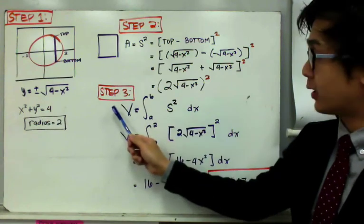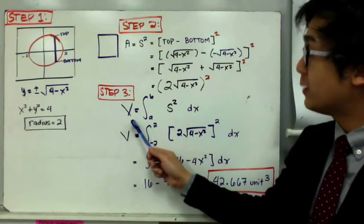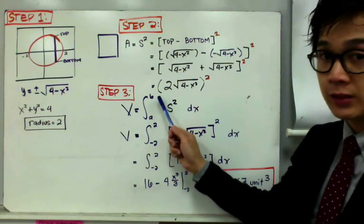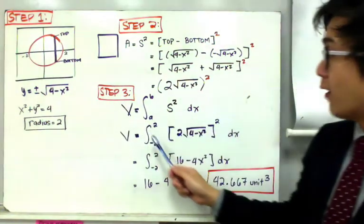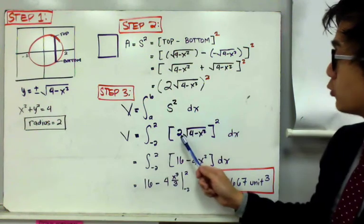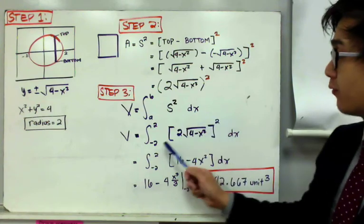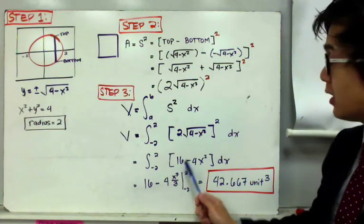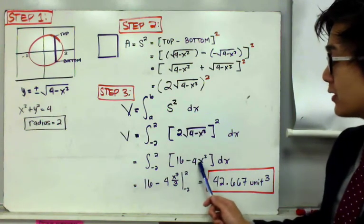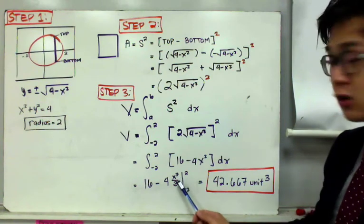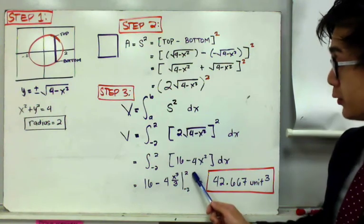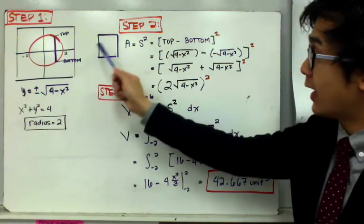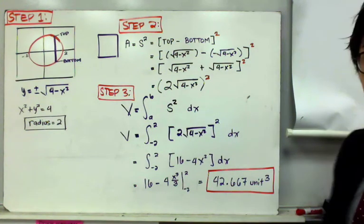For step three, the volume formula is the integral of the area dx from a to b. The limits of integration are from -2 to 2. So the volume equals the integral from -2 to 2 of 4(4 - x²) dx, which simplifies by expanding to ∫(16 - 4x²) dx. Evaluating gives 16x - (4x³/3) from -2 to 2, and computing this, the volume is 42.667 cubic units.